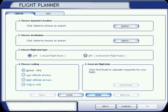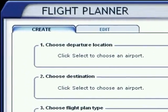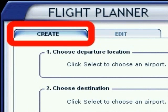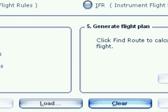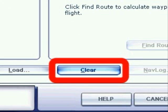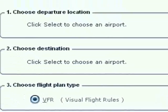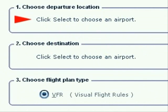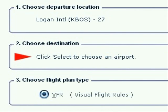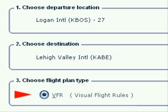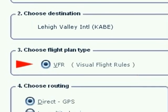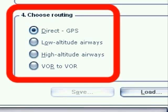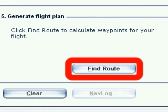This is the opening page of the Flight Planner. Begin by clicking the Create tab, then click the Clear button. Next, select the Departure Airport and Runway, then select our Destination Airport. Our flight will be VFR, and our routing will be VOR to VOR.